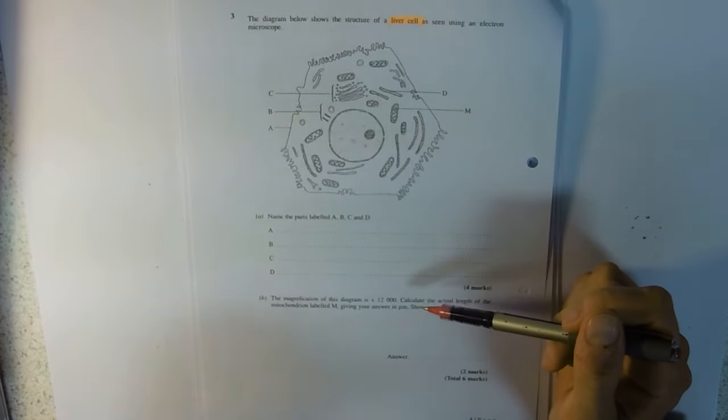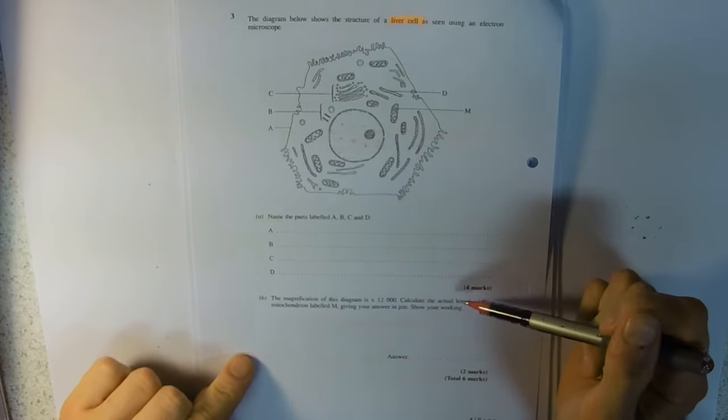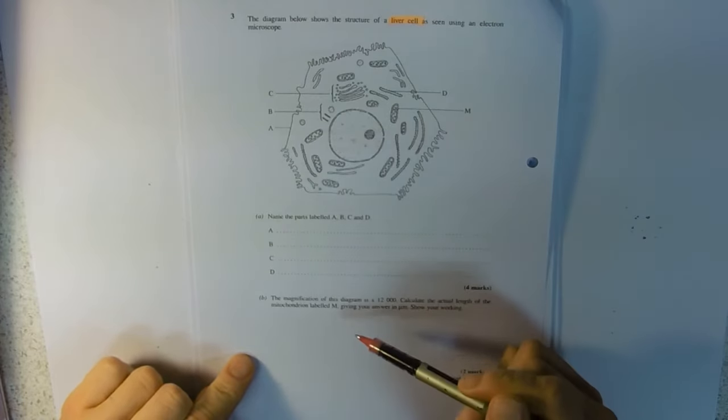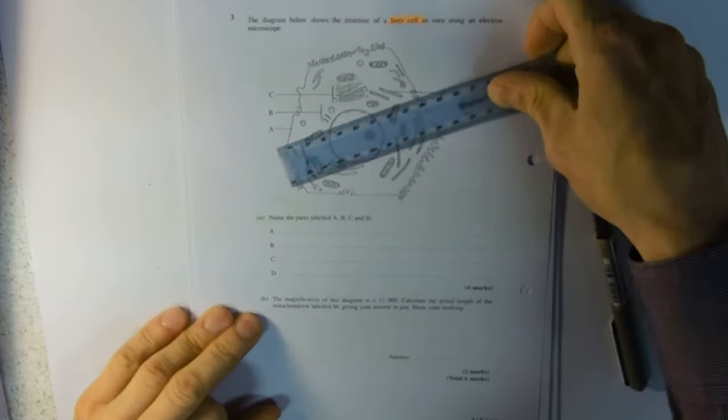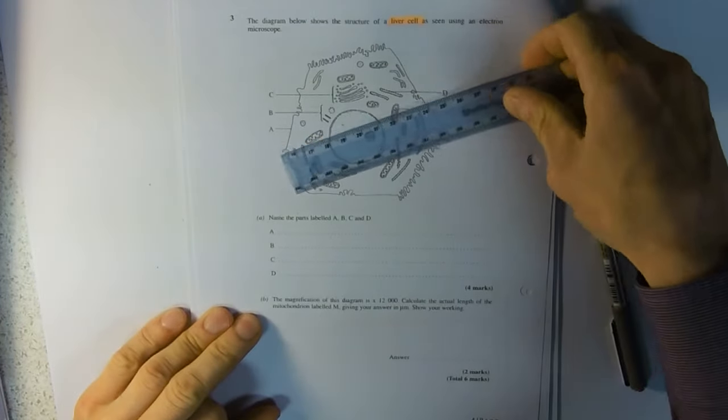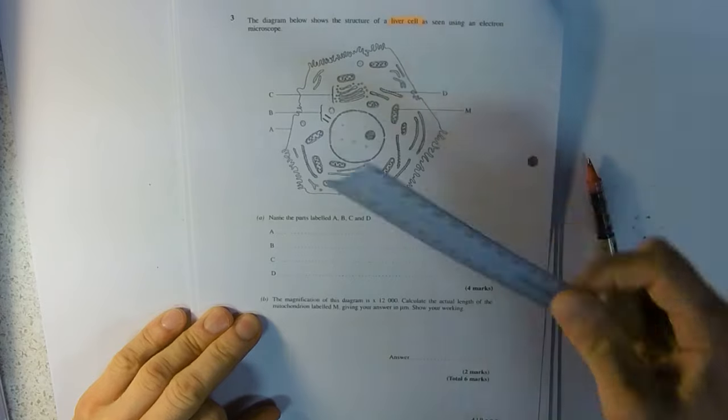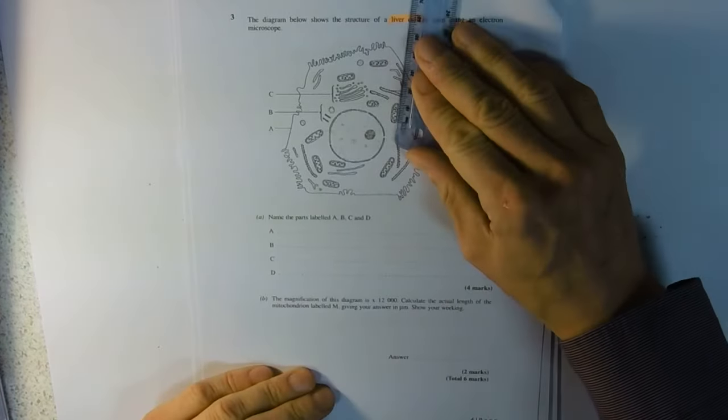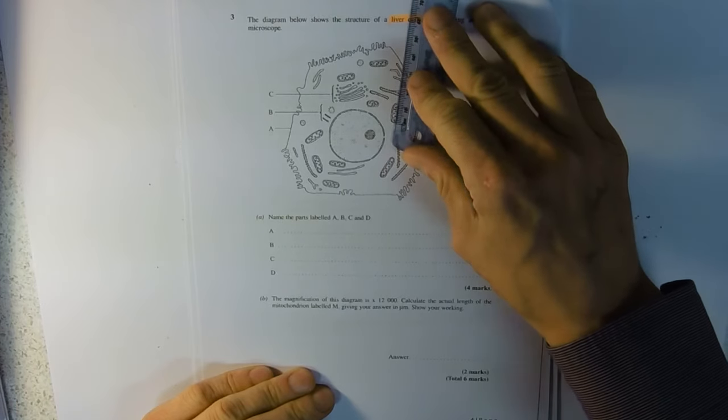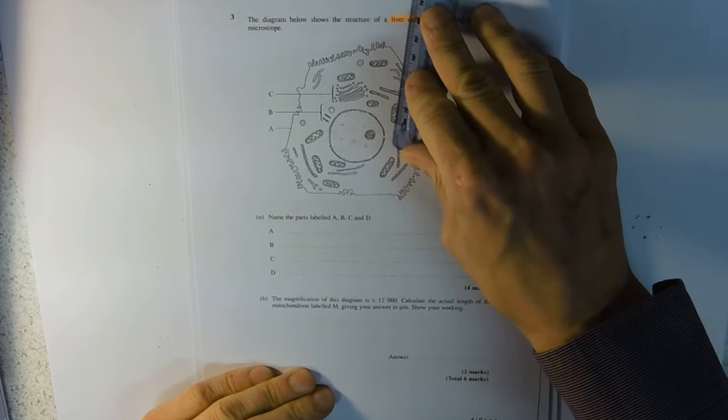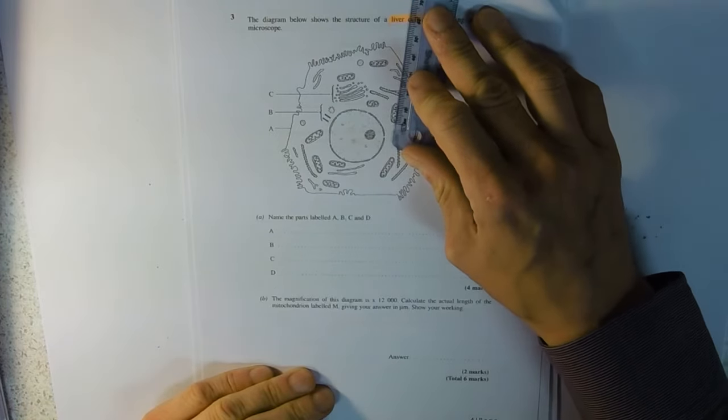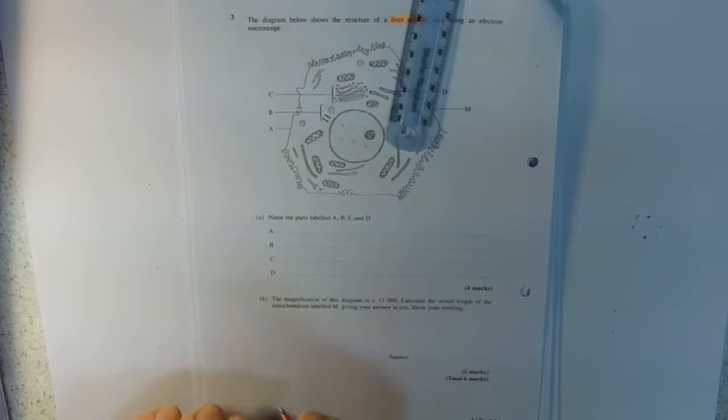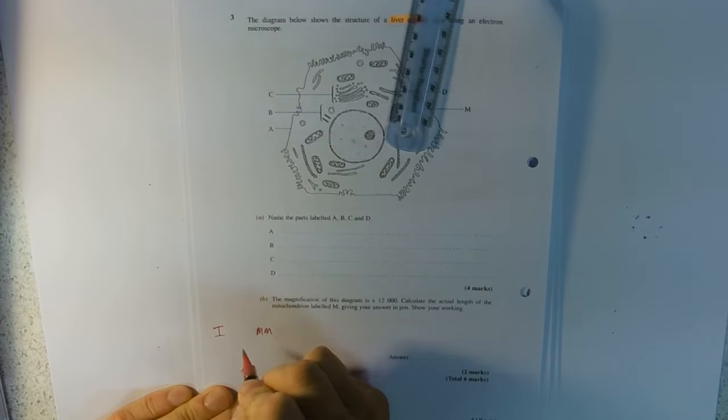The magnification is 12,000 times. Calculate the actual length of mitochondrion labeled M. The most common error here is to measure the width of the entire diagram, but what you need to do is measure mitochondrion M. So I get 11 millimeters there.